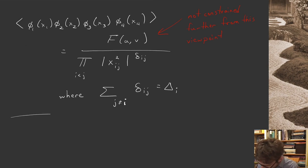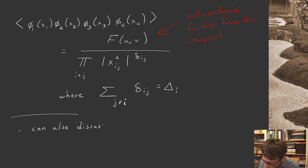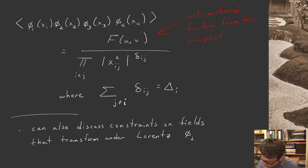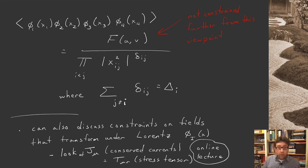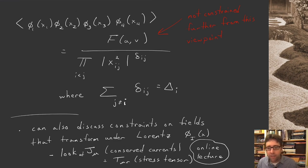We were only talking about scalars here. You can also discuss constraints on fields that transform under Lorentz — non-scalars. I can restore the generalized index i for our conformal primary field. In the online lecture I'd like to look at two special cases: j_mu, which are conserved currents, and the stress tensor T_mu_nu. We'll come back next week and talk about more conceptual issues in conformal field theory — the operator product expansion, radial quantization, and more. Tune in next week and we will get yet deeper into our study of conformal field theory.